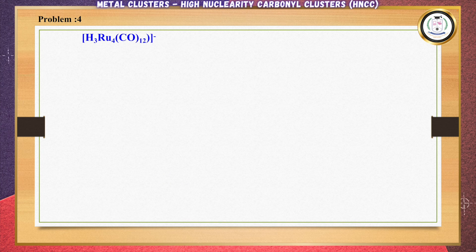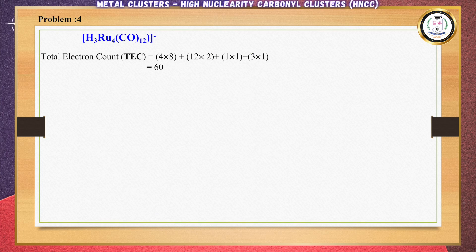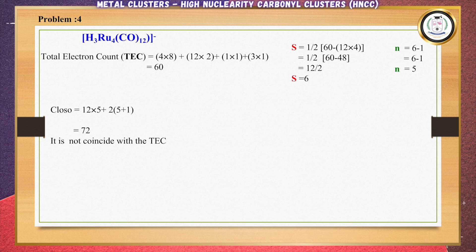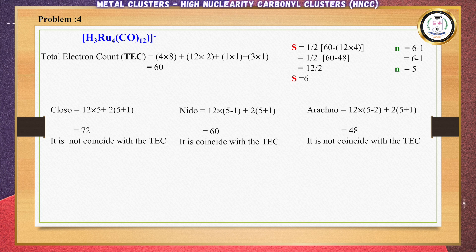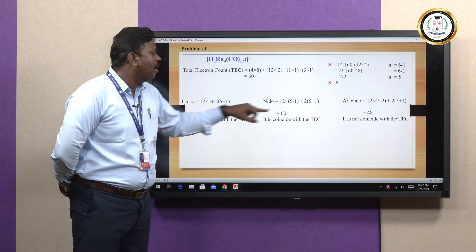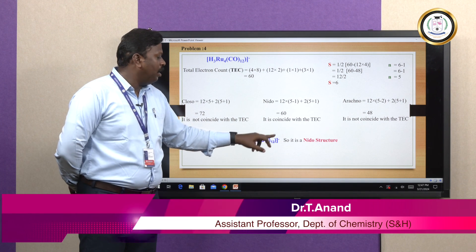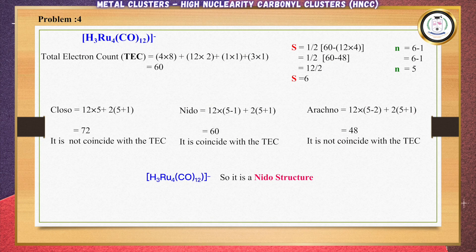Next problem: H3Ru4(CO)12⁻. Here we have hydrogen and a 1− charge. Ruthenium has 8 electrons, CO contributes 2 electrons, there is 1 negative charge, and 3 hydrogens each contribute 1 electron. The total electron count is 60. Applying the S formula gives S = 6, and N = 5. Substituting N = 5: Closo gives 72, Nido gives 60, Arachno gives 48. The total electron count coincides with Nido, so H3Ru4(CO)12⁻ confirms the Nido structure. In this way we can calculate and identify the frameworks of high-nuclearity carbonyl clusters. Thank you.